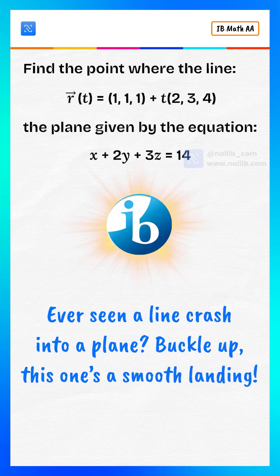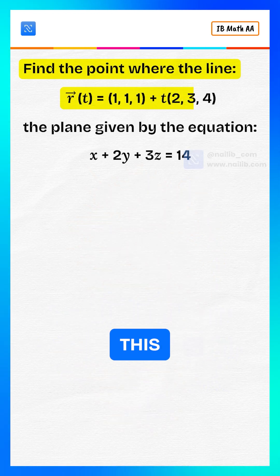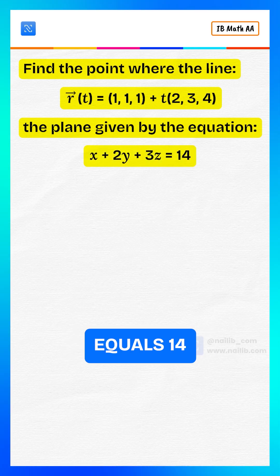Ever seen a line crash into a plane? Buckle up. This one's a smooth landing. Find the point where the line intersects the plane given by the equation x plus 2y plus 3z equals 14.